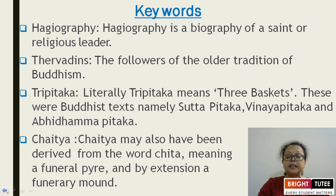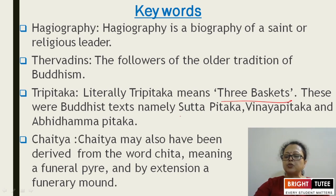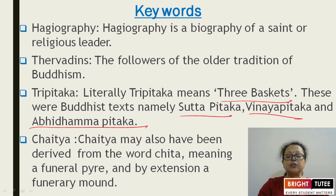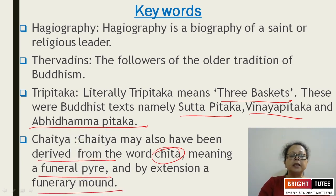Some key words: Hagiography is a biography of a saint or religious leader. Theravadins are the followers of the older tradition of Buddhism. Hinayana and Mahayana — the lesser vehicle and greater vehicle. Tripitaka literally means 'three baskets' — Buddhist texts namely Sutta Pitaka, Vinaya Pitaka, and Abhidhamma Pitaka. Chaitya may also be derived from the word 'chita,' meaning funeral pyre, and by extension a funerary mound.